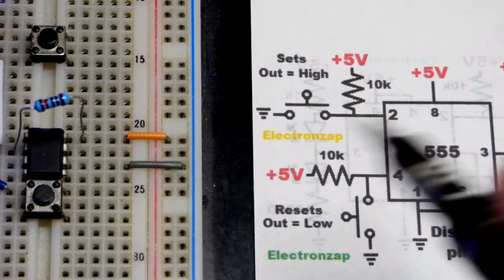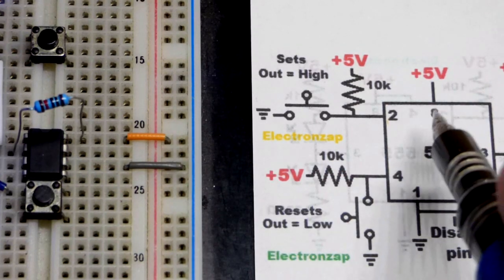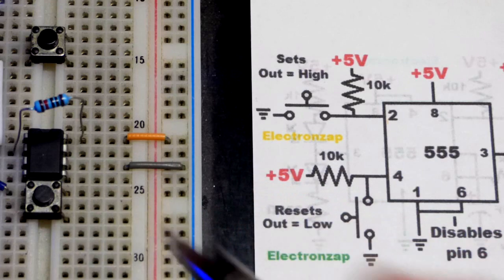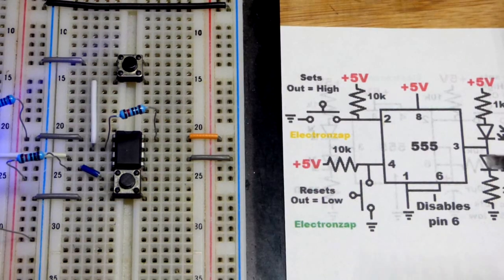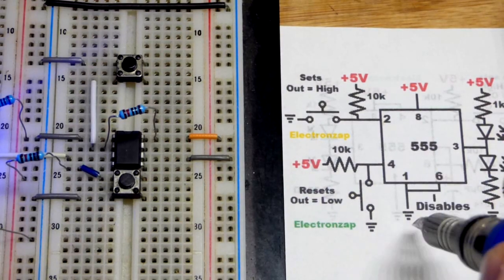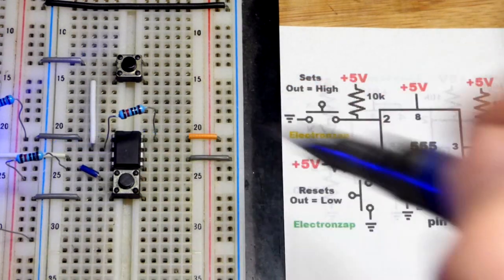We need to power the integrated circuit. We got 5 volts at the rail there. The positive supply going to pin 8 right there VCC. The negative supply called ground goes to pin 1 for powering it.